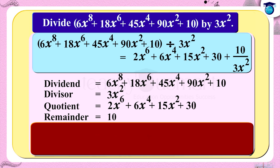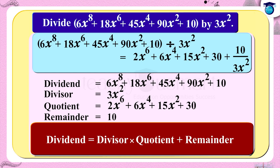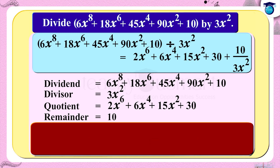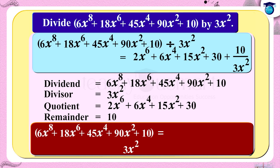We know the division rule: dividend = divisor × quotient + remainder. By the division rule, we can write: 6x⁸ + 18x⁶ + 45x⁴ + 90x² + 10 = 3x²·(2x⁶ + 6x⁴ + 15x² + 30) + 10.